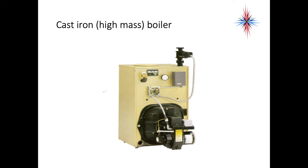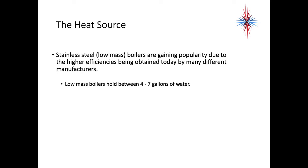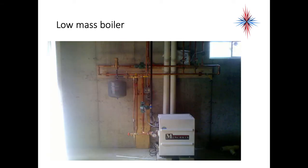From a cold start, it takes a lot of fuel to heat that water to a temperature where it will actually heat the space. Low-mass boilers, like stainless steel boilers, are gaining popularity due to higher efficiencies. Low-mass boilers only hold between 4 to 7 gallons of water. This is an example — a little Munchkin boiler sitting on the ground. It's high efficiency, which you can tell by the PVC vent pipes. Some are now designed to hang on the wall as well.